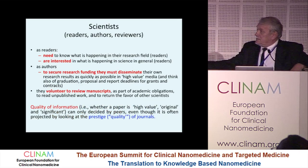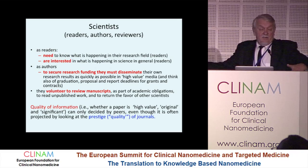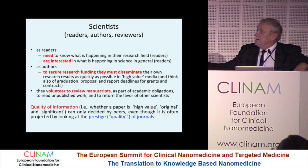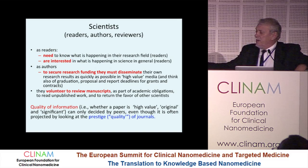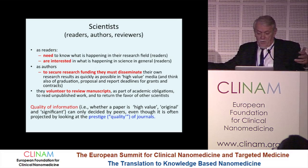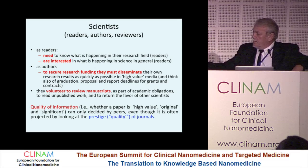Scientists as readers need to know what is happening in their field, not everything — though many of us are curious people. Authors have to secure research funding, and in order to do that, they must disseminate their research as quickly as possible in high-value venues. They also volunteer to review manuscripts as part of academic obligations. A survey of about 6,000 authors provided these numbers. Importantly, the quality of information can only be decided by peers — it cannot be decided by computers, and it cannot be decided, especially broadly, by editors alone.